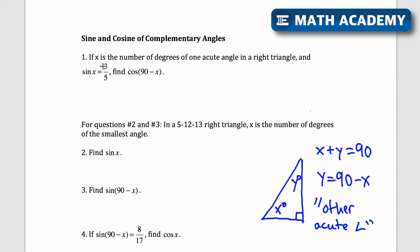Let's go on to these problems. If x is the number of degrees of one acute angle in a right triangle and sine of x is 3 over 5, find the cosine of 90 minus x. That's saying find the cosine of the other acute angle. Let's draw this out — x is going to be here, and sine is opposite over hypotenuse, so that's going to be 3 and 5 as opposite and hypotenuse.